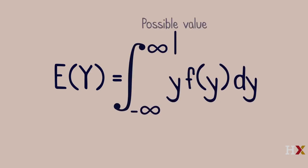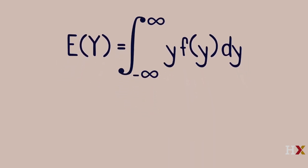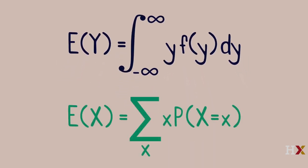It then makes sense to define the expected value of a continuous random variable Y as the integral of Y times the probability density function of Y, from minus infinity to infinity. This is analogous to the expected value of a discrete random variable, with an integral in place of a sum and a PDF in place of a probability.